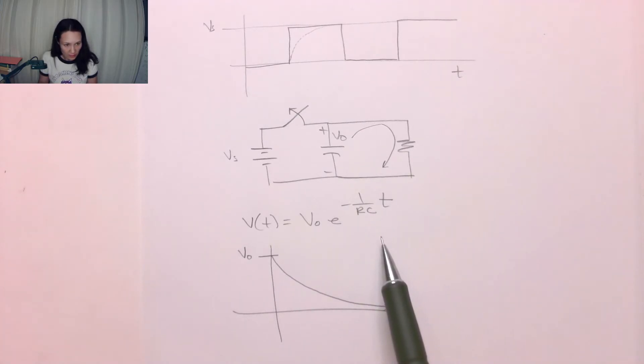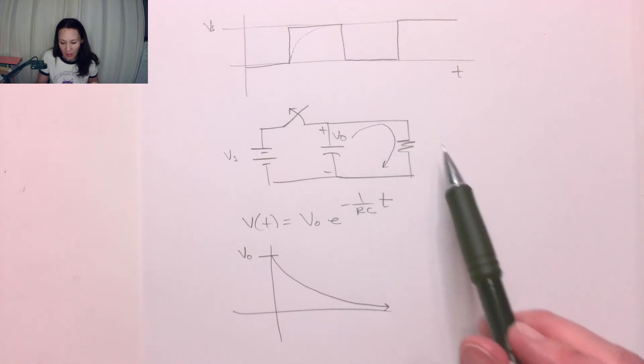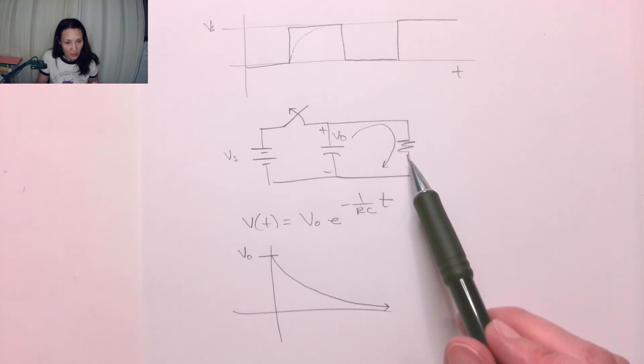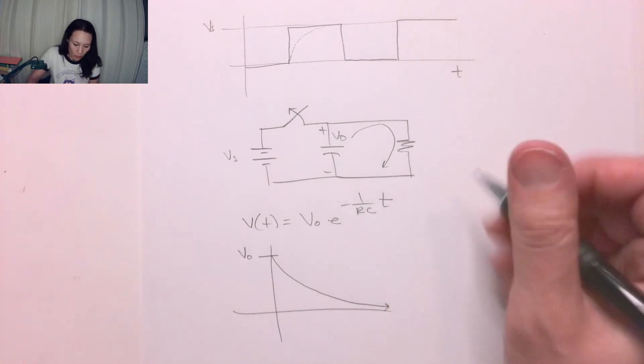This is the equation that governs the voltage in the RC circuit. You can also find the current in the circuit by applying Ohm's law at the resistor.